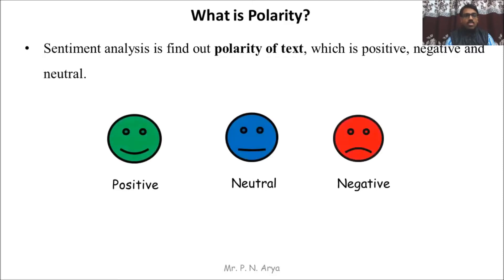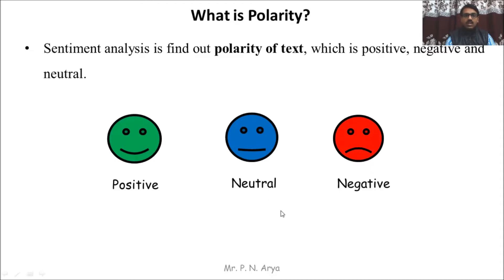What is polarity? Sentiment analysis finds out the polarity of text, which is positive, negative, and neutral. The positive emoji indicates a happy face, neutral means no clear indication, and negative indicates a sad face. So positive means satisfied or happy, and negative means angry or not satisfied.